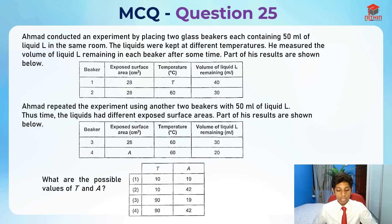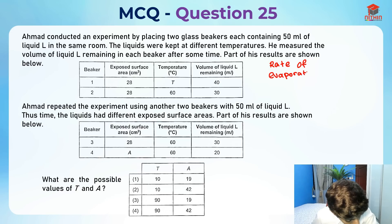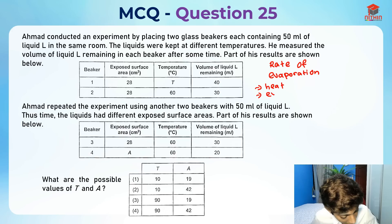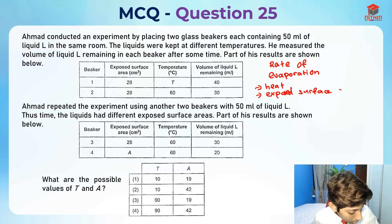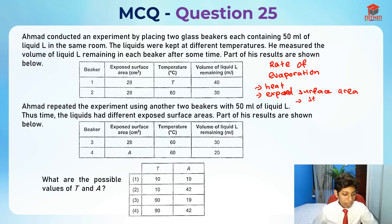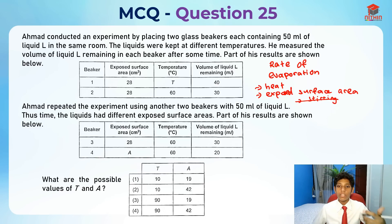The rate of evaporation depends on heat, exposed surface area, and rate of stirring. Since there is no stirring in this experiment, we consider only heat and exposed surface area. When there is less heat, there is more liquid left. So the temperature T for beaker 1 is definitely lower than 60.